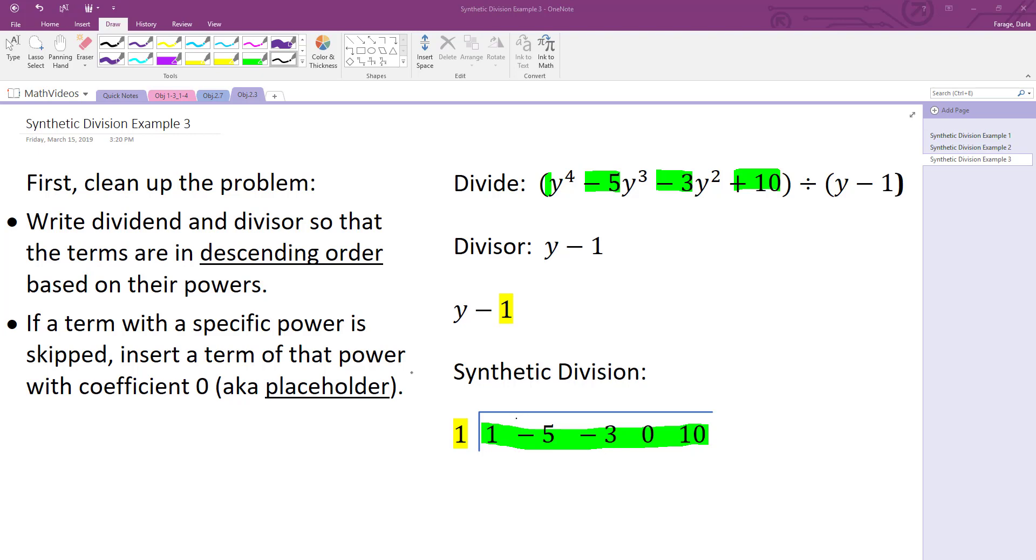So from there we'll go ahead and do this example. We're going to start off just like we always do by pulling down that first coefficient under our dividend and then we draw our line. Anything below the line is going to multiply by our a. Anything above the line is going to add or combine with our coefficients.